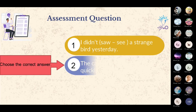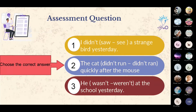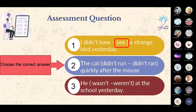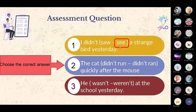سؤال التقييم الأول: I didn't __ a strange bird yesterday — saw or see? الإجابة: see. لأن بعد didn't يجب أن يأتي مصدر الفعل verb one. إذن: I didn't see a strange bird yesterday — لم أرَ طائراً غريباً البارحة.